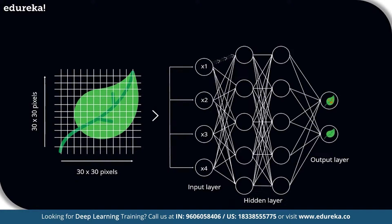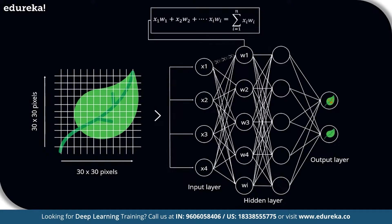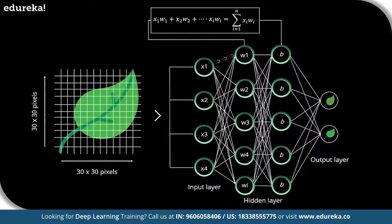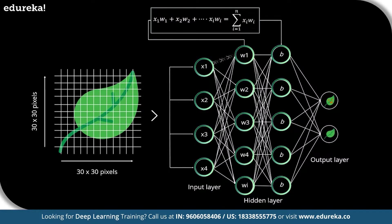As the input is passed from the input layer to the hidden layer, an initial random weight is assigned to each input. The inputs are then multiplied with their corresponding weights and their sum is further processed through the network. A numerical value called bias is assigned to each perceptron. Furthermore, each perceptron is passed through an activation or transformation function that determines whether a particular perceptron gets activated or not.